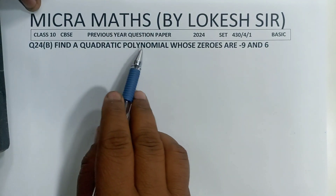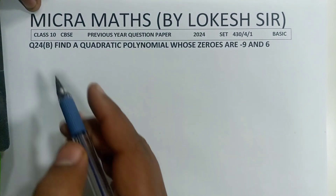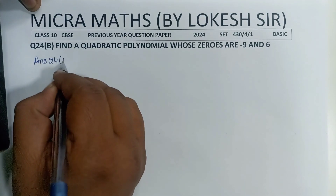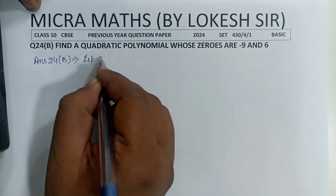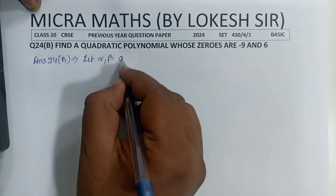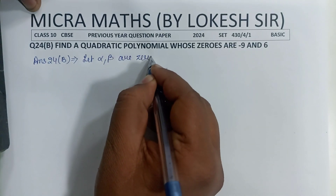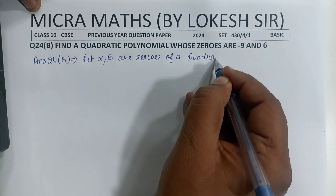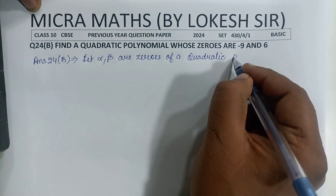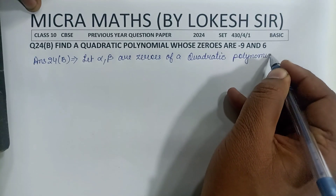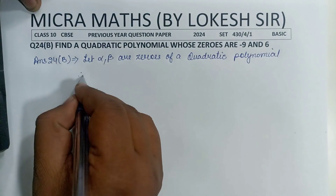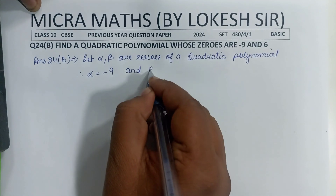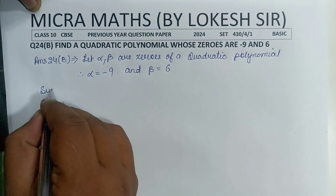Find a quadratic polynomial whose zeros are -9 and 6. Let alpha and beta be the zeros of the quadratic polynomial, therefore alpha equals -9 and beta equals 6.